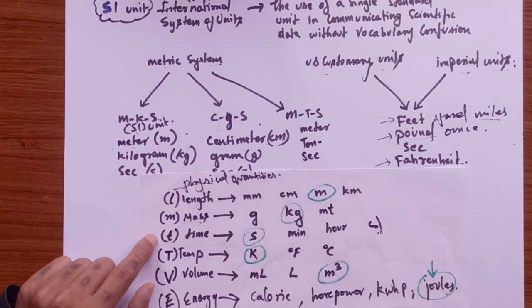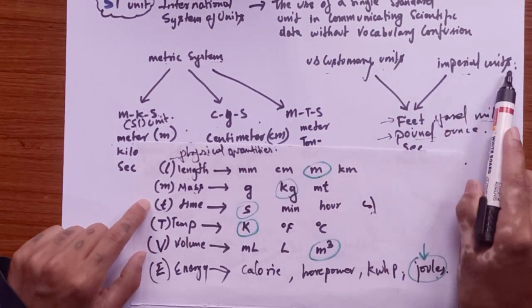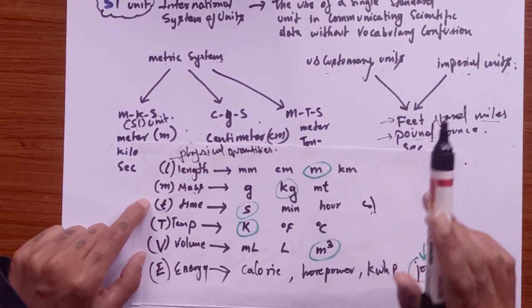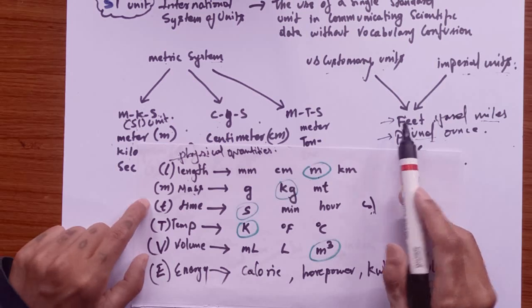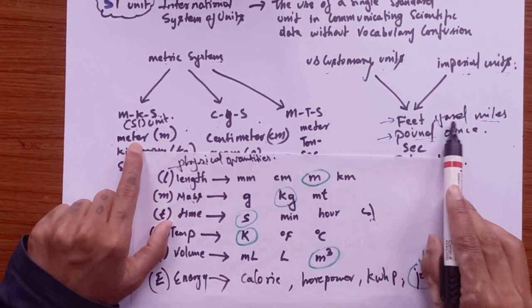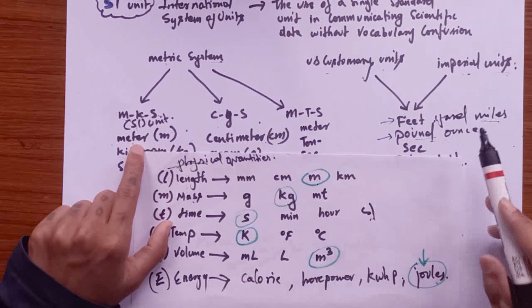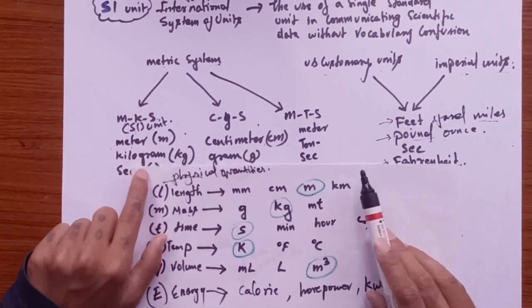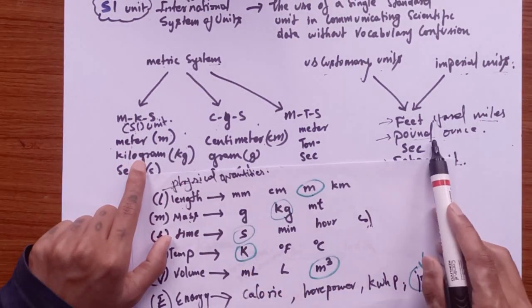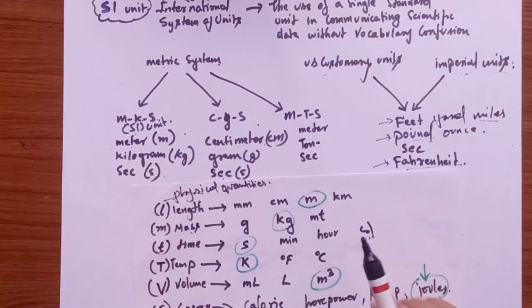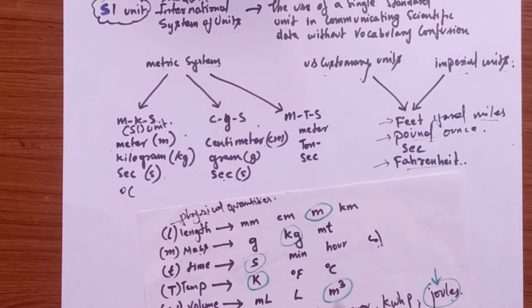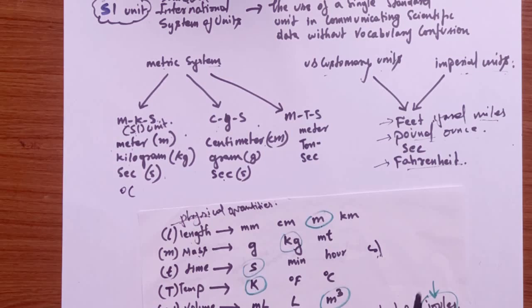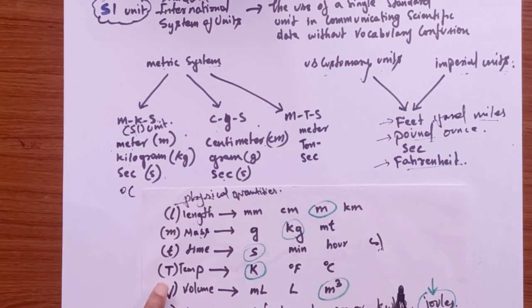We also have the US customary units or the imperial units, which these units are very much alike. These are the units where instead of using meter, they will use yard or instead of using kilometer, they will use miles. Instead of using kilogram, they will use pound or ounce, or instead of using degree Celsius for measuring the temperature, they will use Fahrenheit.